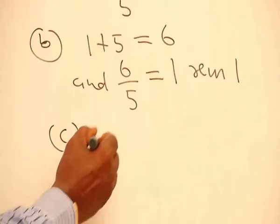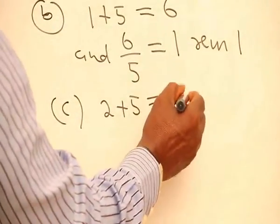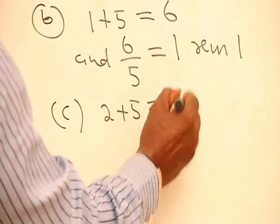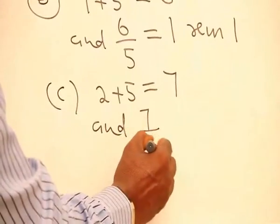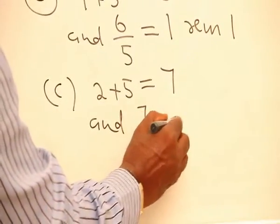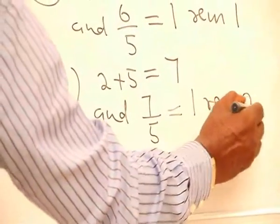C, 2 plus 5 is equal to 7. And then 7 divided by 5 will give you 1, leaving a remainder 2.